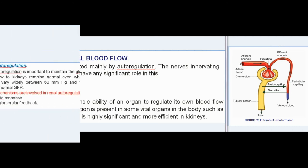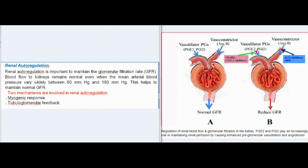Autoregulation is highly significant and most efficient in the kidneys. Renal autoregulation is important to maintain the glomerular filtration rate (GFR). Blood flow to the kidneys remains normal even when the mean arterial blood pressure varies widely between 60 mmHg and 180 mmHg, which helps maintain normal GFR. Two mechanisms are involved in renal autoregulation: the myogenic response and tubuloglomerular feedback.